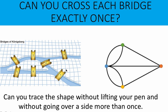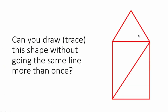To analyze this problem, let's begin with some simple graphs. Let's say we have this red graph at the right, and we ask ourselves: can we draw or trace this shape without going the same line more than once? We can try going this way — and notice that I was able to trace all the sides of this graph without lifting my pen and tracing each side only once. Therefore, this shape is traversable.